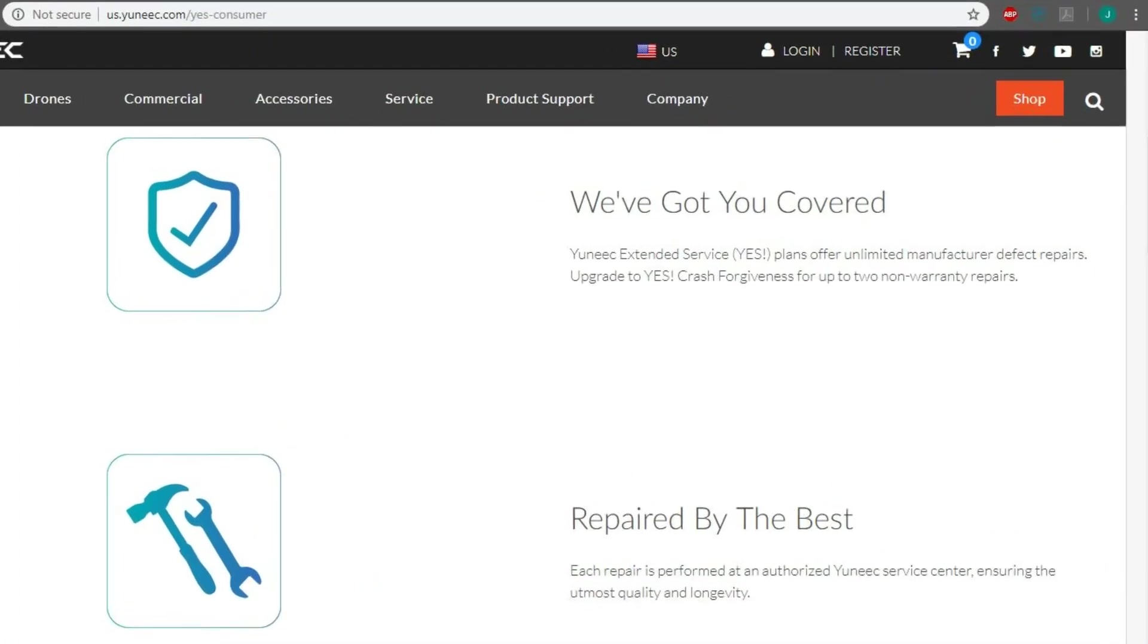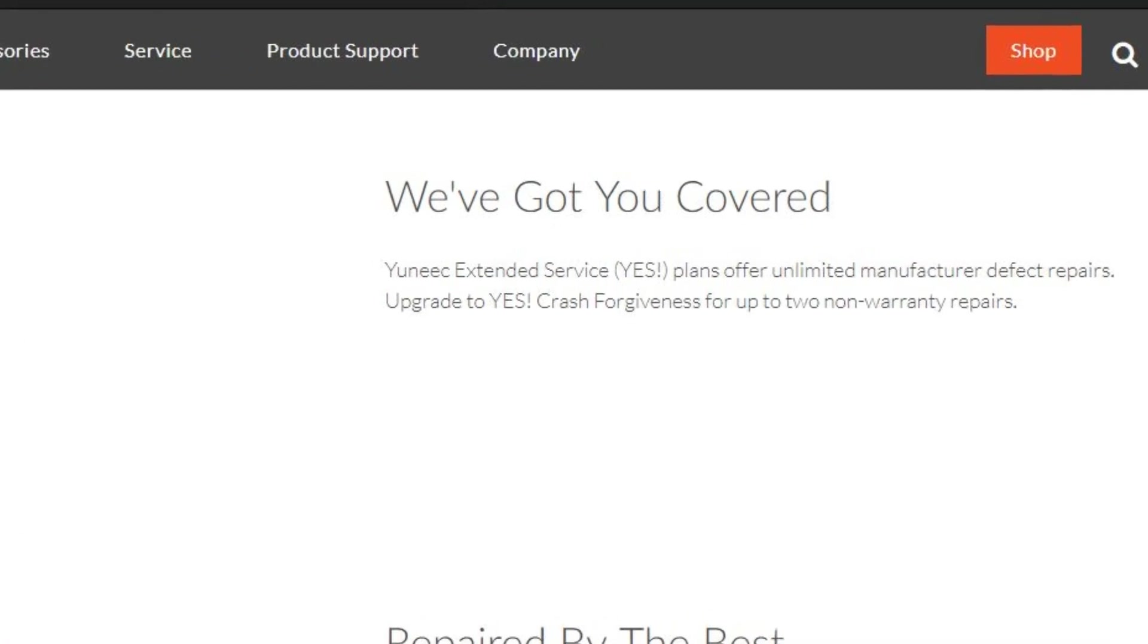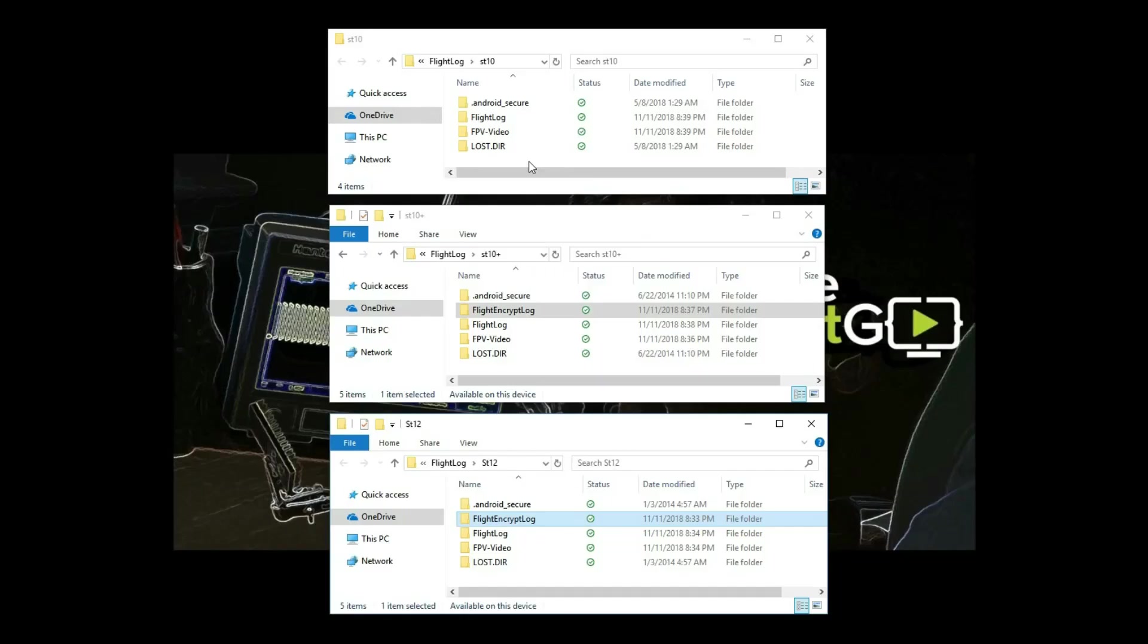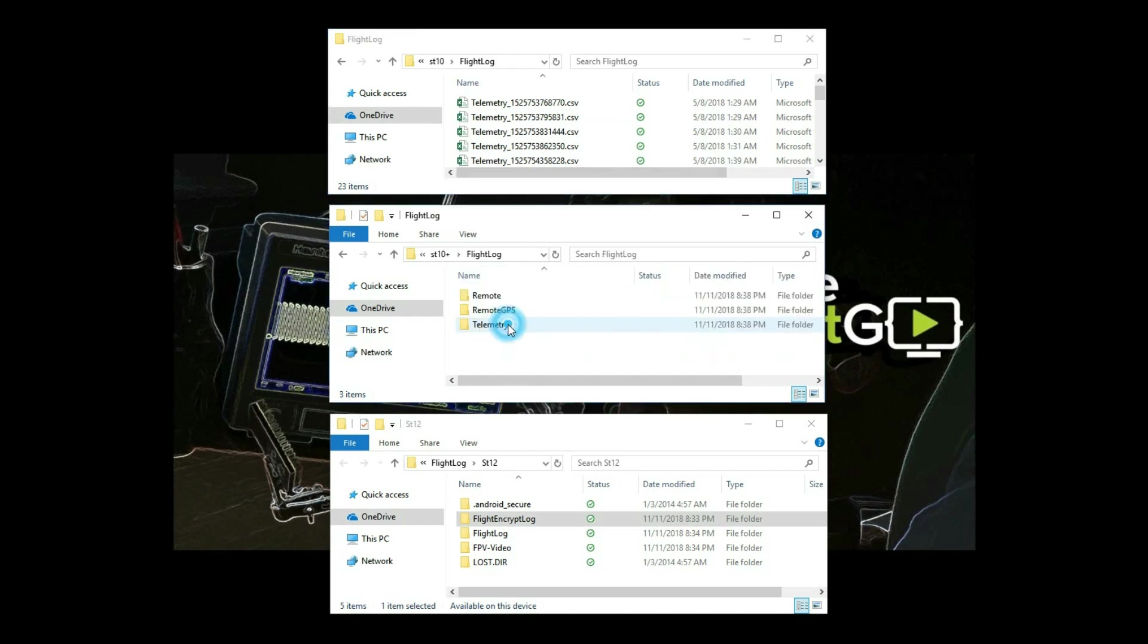This encrypted log allows Yuneec to provide a crash forgiveness warranty. With this log, they can discover whose fault it was. Another difference is the ST10 only has telemetry data, while the ST10+ and the ST12 have remote and telemetry data.